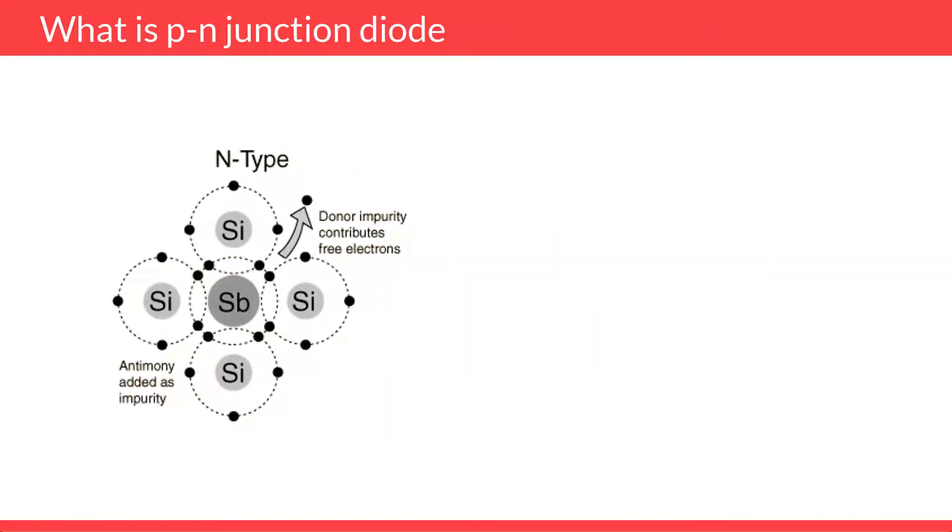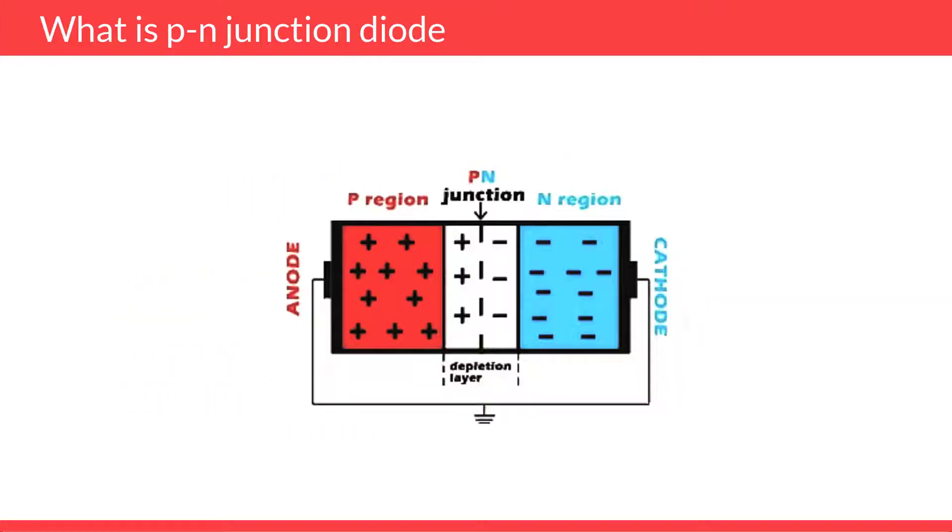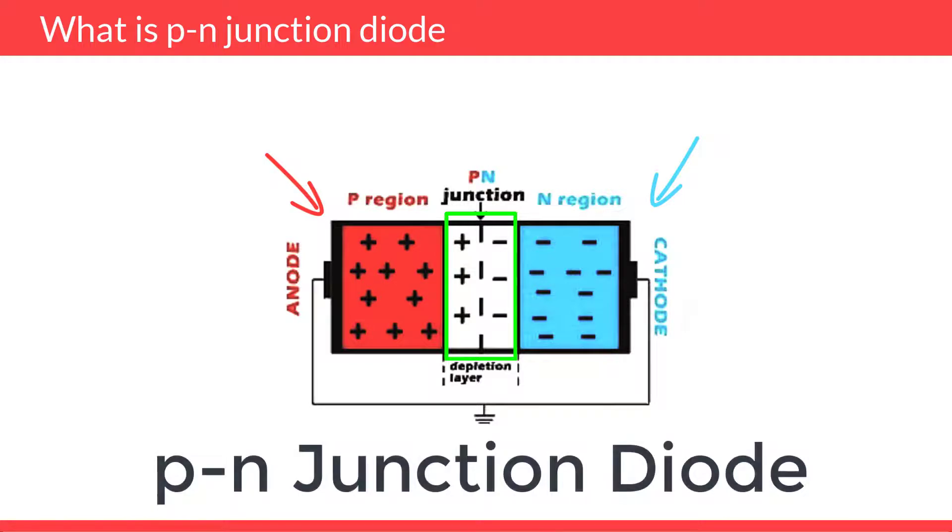In N-type semiconductors, free electrons are the majority charge carriers, whereas in P-type semiconductors, holes are the majority charge carriers. When the N-type semiconductor is joined with the P-type semiconductor, a PN Junction is formed. This PN Junction is called a PN Junction Diode.